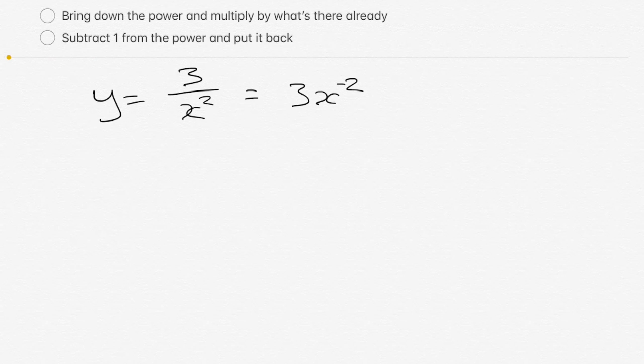From here, we can apply our laws. So in this case, dy dx, we're going to bring the power down and multiply by what's there. Negative two times three is negative six x to the power of, and I subtract one from the power, remembering that negative numbers when you subtract one, they get further away from zero. So that becomes negative three.